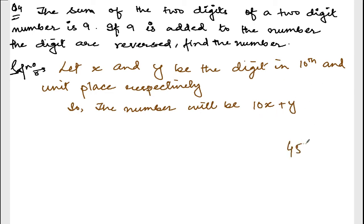How to write 45? You write 4 into 10 plus 5, right? Here 4 is x, 5 is y, and I am multiplying 10. This is how I am writing 10x plus y. I hope you can understand. The number will be 10x plus y.